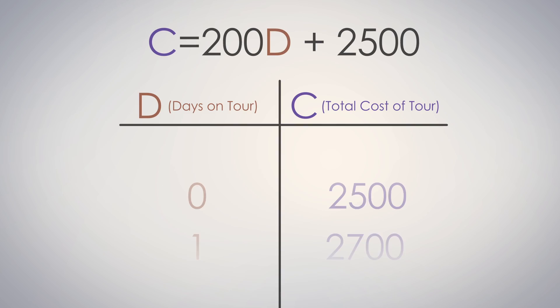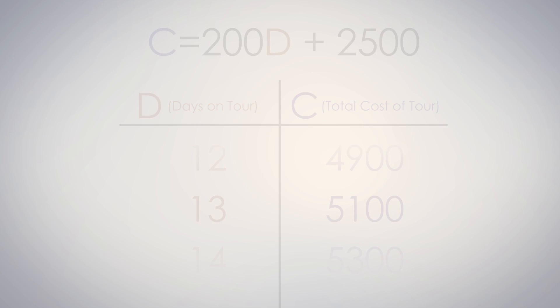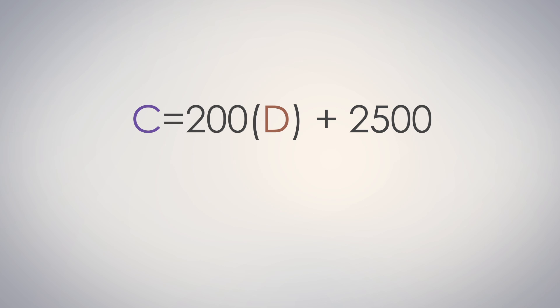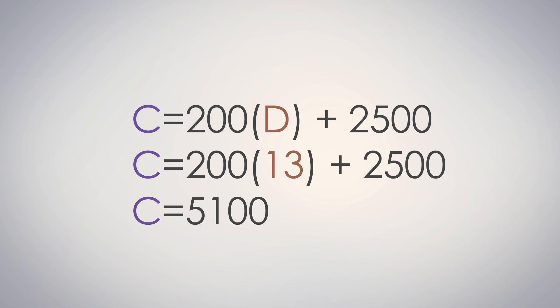Let's see what happens to your total cost if you decide to stay 13 days to play 13 gigs. You'll multiply your daily rate by 13 days and then add the fixed cost for a total of $5,100. C equals 200D plus 2500. C equals 200 times 13 plus 2500. Therefore, C will equal $5,100.